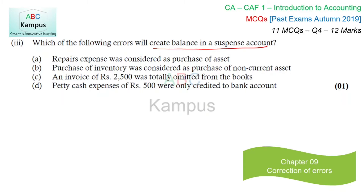Let's check each option. First: repair expense was considered as purchase of asset. Both repair expense and purchase of asset are debited — so one debit is replaced by another debit; total debits and credits won't differ, and no suspense account balance is created. Second: purchase of inventory was considered as purchase of non-current asset. Both are debit entries — once again, no suspense account is created.